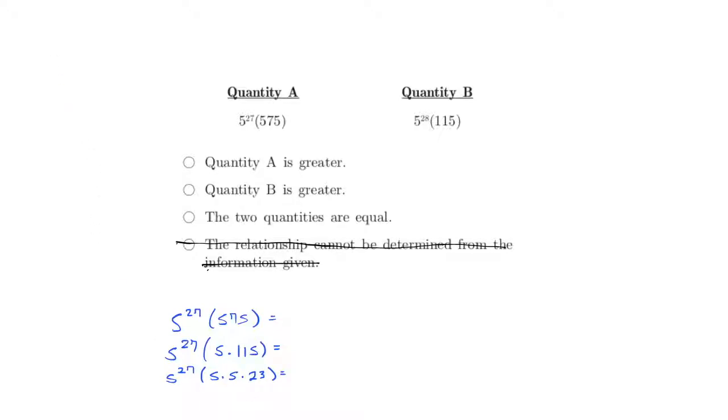And now associative property says that really, these parentheses don't matter too much. They're all being multiplied, we can do them in any order. Now look at this, 5 to the 27th times 5 times 5, well that's just times 5 squared. That's two more 5s added on to this string of 5s, so that means this whole block here is 5 to the 29th times 23.